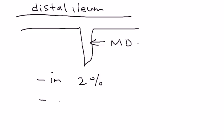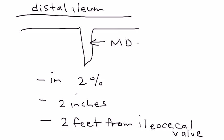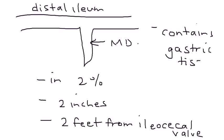It is about 2 inches in length and, location-wise, sits 2 feet from the ileocecal valve — a very important landmark. The key feature of Mechal diverticulum is that it actually contains ectopic tissue, such as gastric tissue or pancreatic tissue.